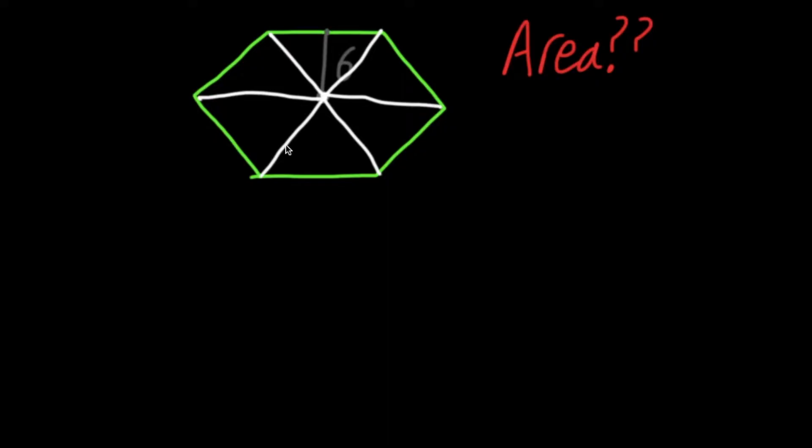Now, because this is a regular hexagon, all of our side lengths are exactly the same. This means that all these triangles will also be exactly the same. So, if we can find the area of just one of these triangles, we can multiply that by 6, because we have 6 triangles, to find the area of this hexagon.